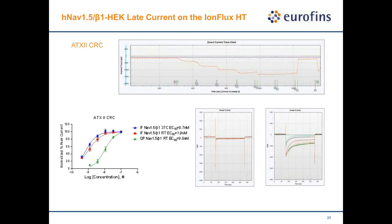We also have a cell line with beta-1 auxiliary subunits and performed the same experiments using ATX2 dose-response. The baseline response is again very stable, and introducing different concentrations of ATX2 shows a very nice step-like dose-dependent response. Comparing 37°C on IonFlux to room temperature and to QPatch, there is a shift between QPatch potency values and IonFlux, but no temperature-dependent potency shift on the NaV1.5 beta-1 cell line.